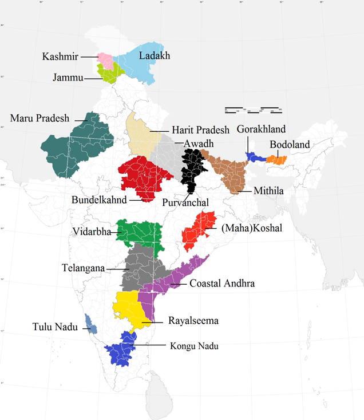Tulu Nadu is a border region between the states of Karnataka and Kerala in southern India. The demand for a separate state is based on a distinct culture and language, which does not have official status, and neglect of the region by the two state governments. To counter these demands, the Karnataka and Kerala state governments have created the Tulu Sahitya Academy to preserve and promote Tuluva culture. The proposed state would comprise three existing districts: Dakshina Kannada and Udupi from Karnataka, and Kassaragad district from Kerala, along with Kodagu district of Karnataka.